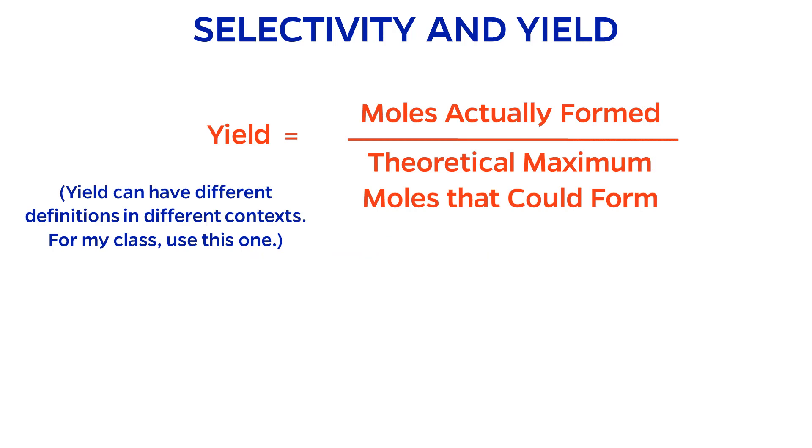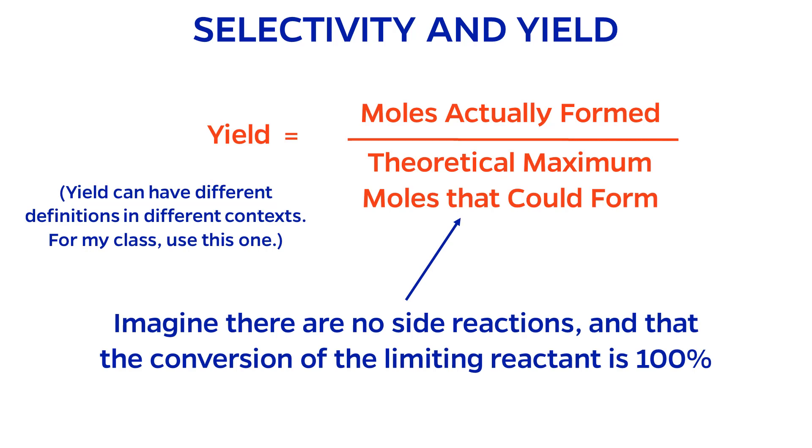Yield is a specification that may have different definitions depending on the context. In my class, unless otherwise stated, you should interpret the yield to be the moles of desired product that actually form divided by the theoretical maximum moles of desired product that could form. To work out the value of the denominator, imagine that there were no side reactions and the conversion of the limiting reactant was 100%.